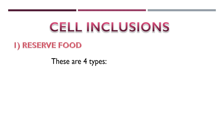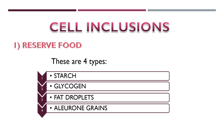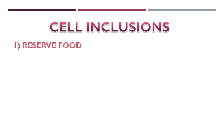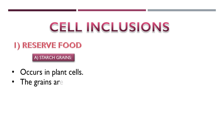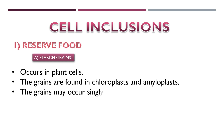First is reserved food. Here we have four types: starch, glycogen, fat droplets, and aleuron grains. These include major storage carbohydrates in plants and animals. First, starch grains occur in plant cells. The grains are found in chloroplasts and amyloplasts. This starch is used in plants as complex carbohydrates.